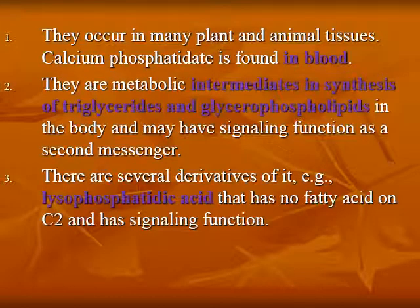Phosphatidic acid occurs in many plant and animal tissues. Calcium phosphatidate is found in blood. They are metabolic intermediates essential for triglycerides and glycerophospholipids in the body, and function as a second messenger in signaling. There are several derivatives; for example, lysophosphatidic acid that has no fatty acid on carbon number 2 and has a signaling function.